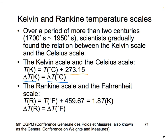In the English system, the thermodynamic temperature scale is called the Rankine scale. One Rankine difference equals one degree Fahrenheit difference, and the two scales differ by 459.67 degrees. Additionally, one Kelvin difference equals 1.8 Rankine — that is the relationship between the two thermodynamic temperature scales.